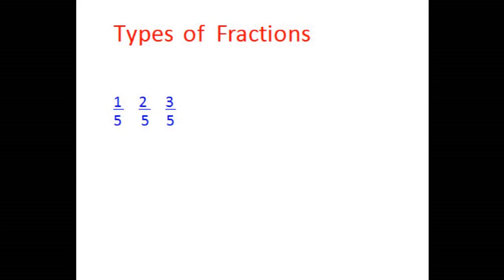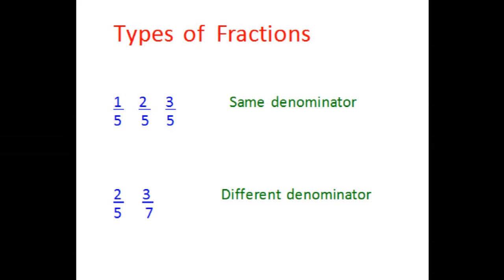What we see here is that the denominator is the same for all of these fractions. Now let's look at some more fractions: 2 over 5 and 3 over 7. What we see here is that the denominator is different.